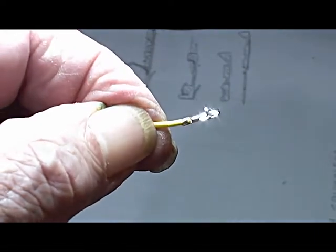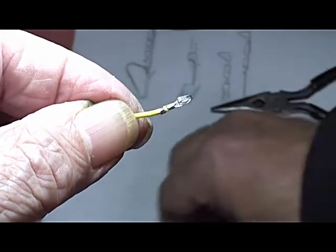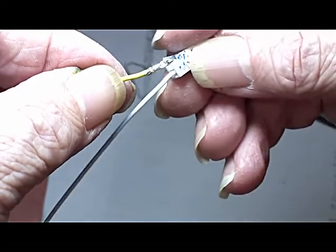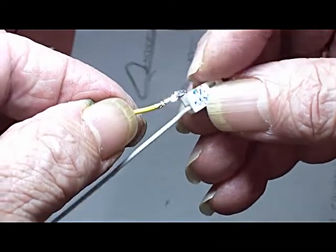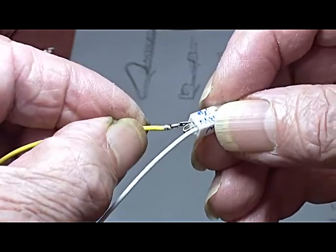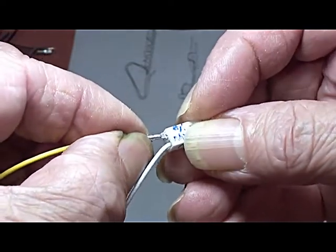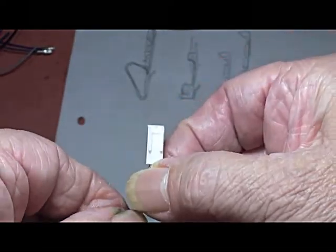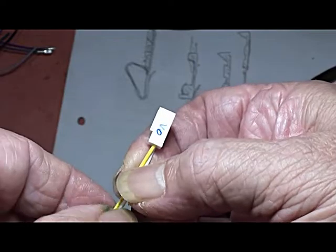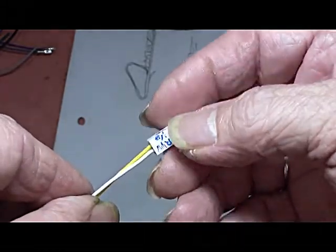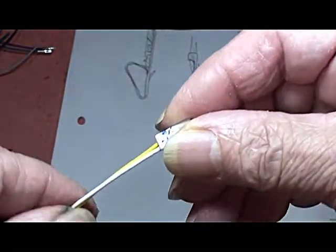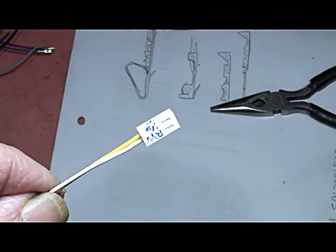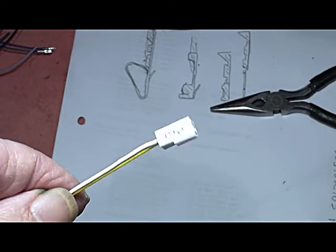So now we can fit that into the housing. I'm using yellow for the VO connection. And it goes click. Once it's clicked it's in. And it's done. That's how I make my little connectors up. I find soldering is fairly reliable.